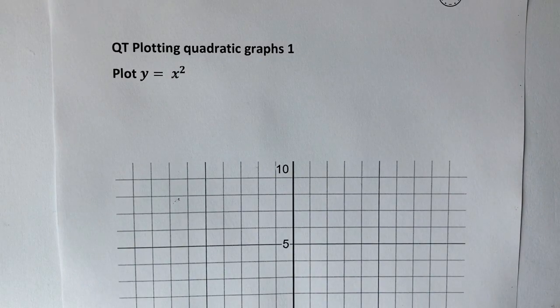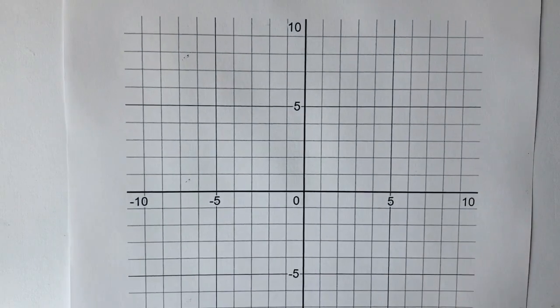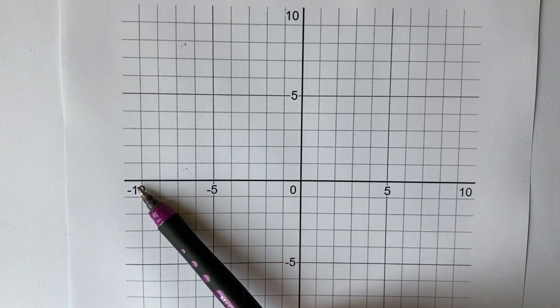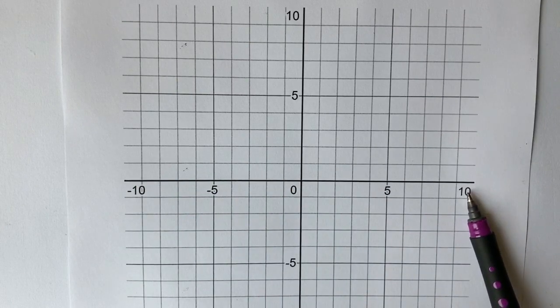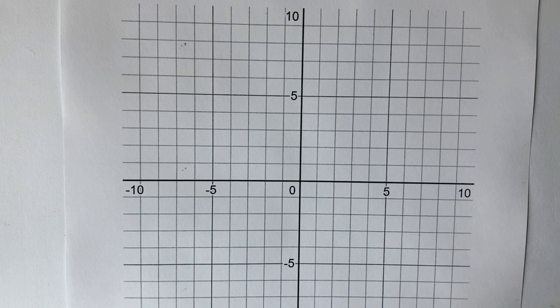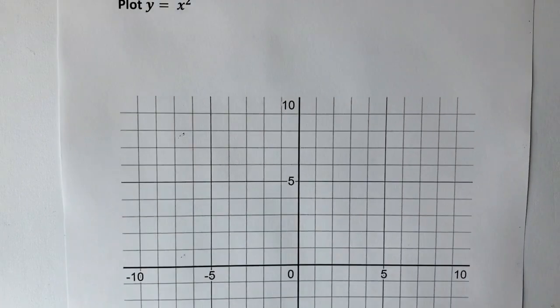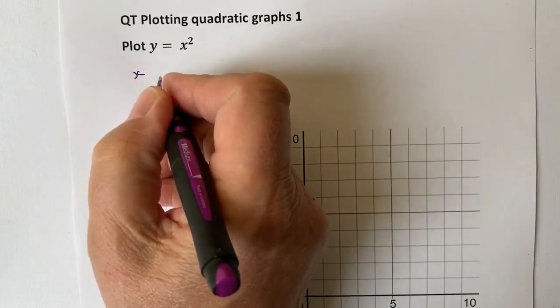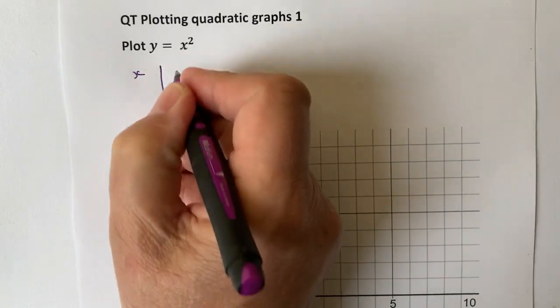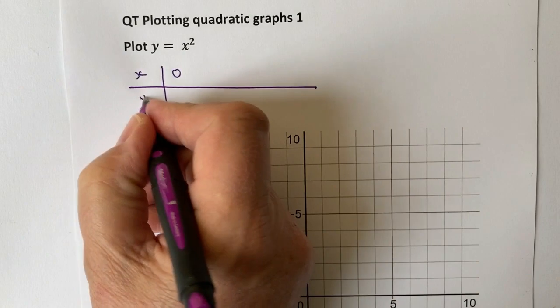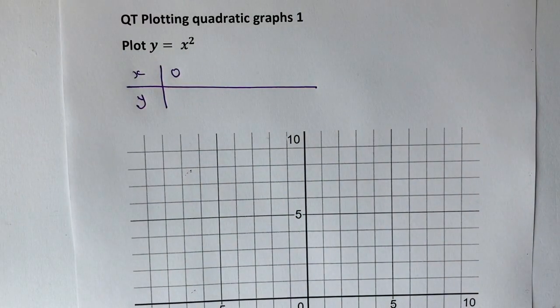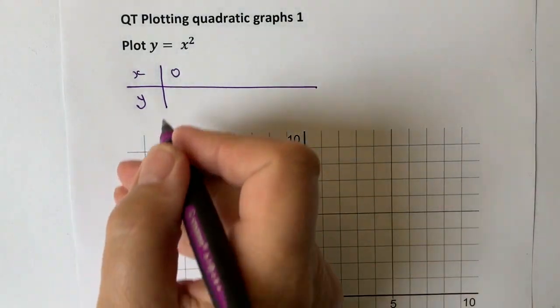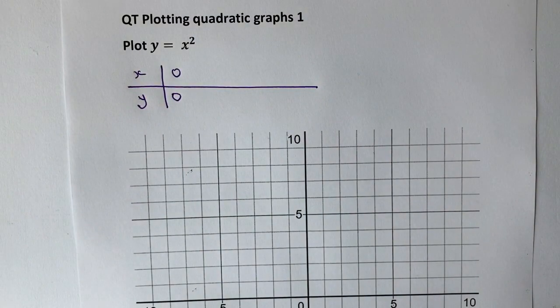So we're being asked to plot y equals x squared. Well, if we have a look at the grid itself, we've got values of x which are going to go from minus 10 all the way through to positive 10. And it's really down to just a little bit of practice to figure out which values of x we're going to use. What I would normally do is I suggest that you start with x equals 0. Now, the reason we do that is because it gives you some sort of anchor point. So when the value of x is 0, we've got 0 squared.